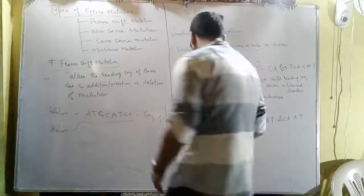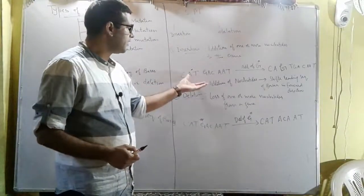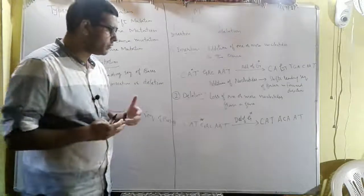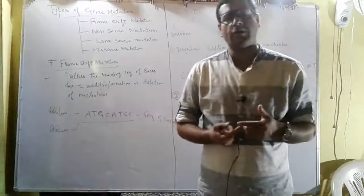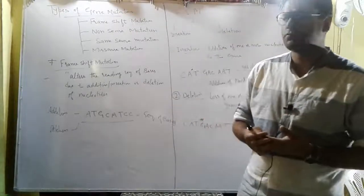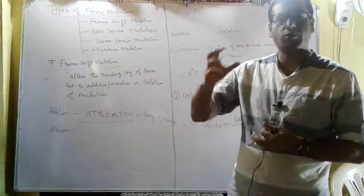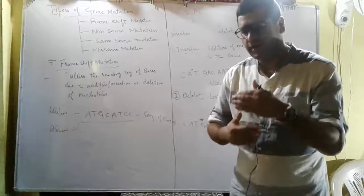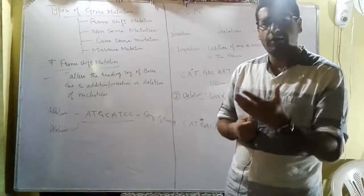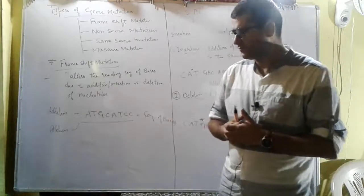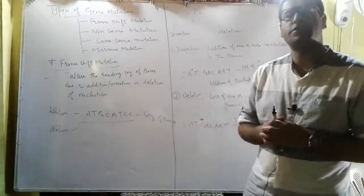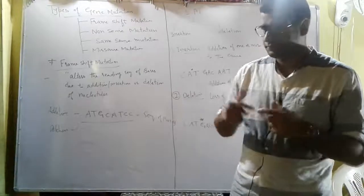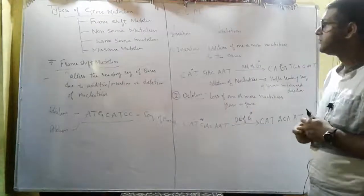Sometimes there is the loss of one nitrogenous base, or the addition of one nitrogen base. Sometimes two or more than two nitrogenous bases will get added to the gene, or there is the loss of more than one nitrogenous bases from the gene. There is also a possibility that both insertion and deletion can occur in the same gene. Remember that the rate of this mutation is very, very low — it has been found that there is a one in one million chance that this gene mutation occurs.